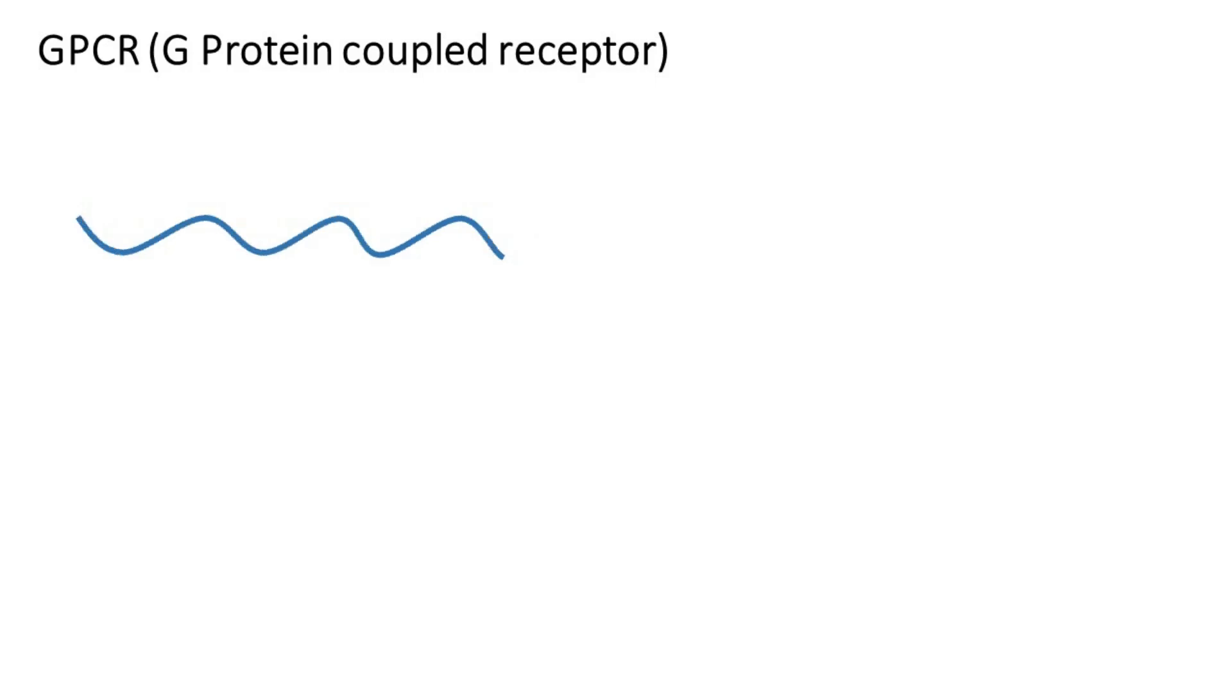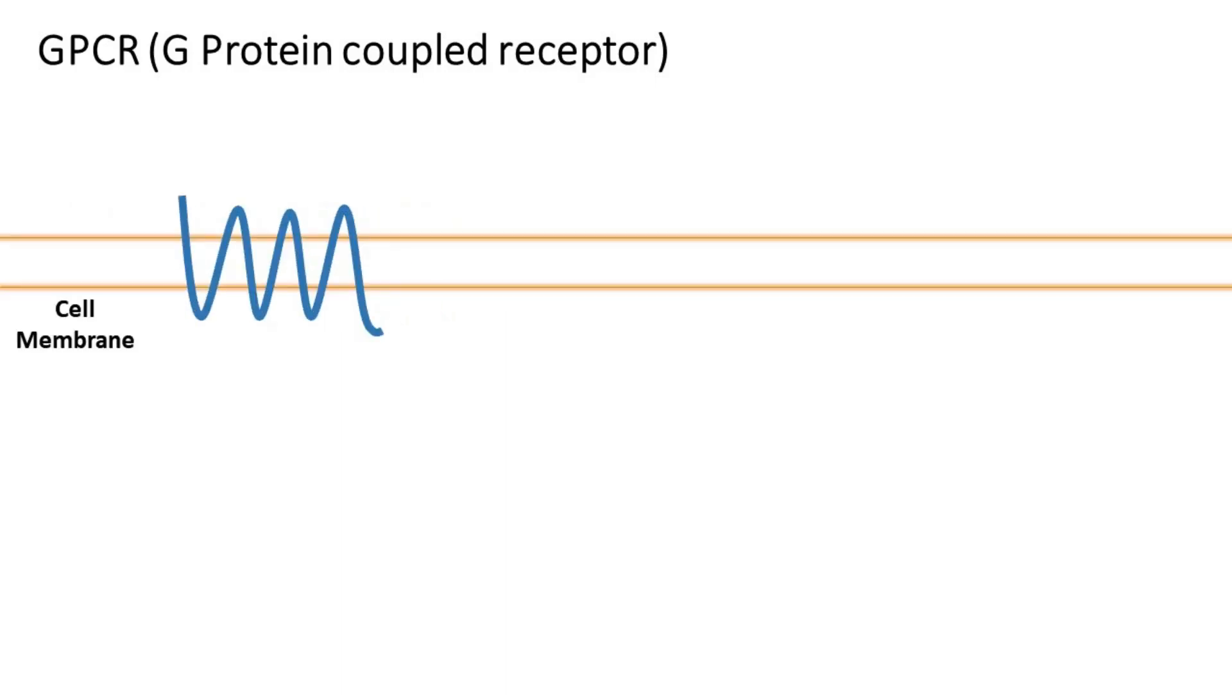This polypeptide chain is folded and embedded in the cell membrane. The protein is folded in such a way that it spans across the plasma membrane seven times. It is also called a seven-transmembrane receptor.